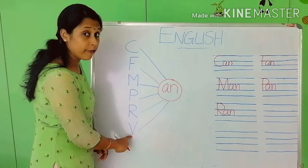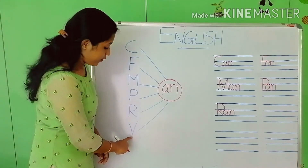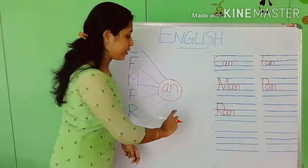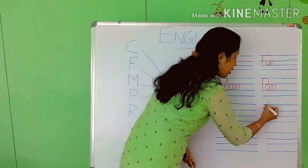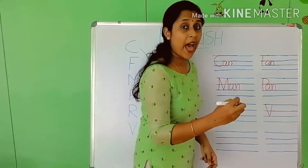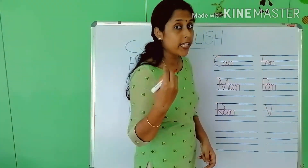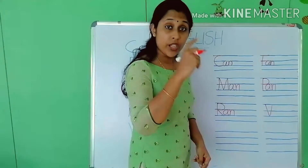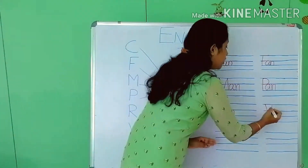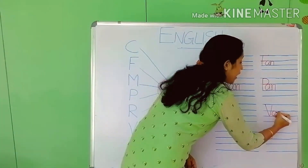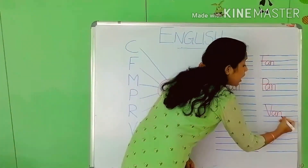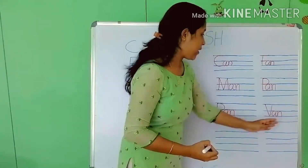Next is V. When I say the word 'van', which sound do you hear first? V. V is for which alphabet? B. V and AN — A and N are put together to make the sound AN. V-A-N — 'van'.